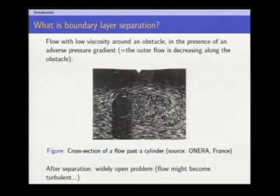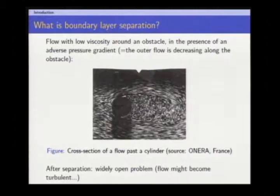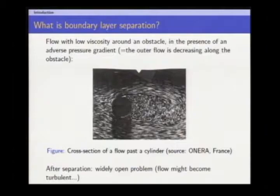First, a picture of separation, which is from the French research agency Onera. What you're seeing here is the cross section of the flow. Here in black you can see a cylinder, which is an obstacle. And here you can see the streamlines of the flow. The flow is moving from here to here. As it approaches the cylinder, at first the flow remains attached to it. And then at some point around here, you see that the flow somehow detaches itself from the cylinder. You can see the streamlines sweeping there, and here you see some large eddies, large swirls.